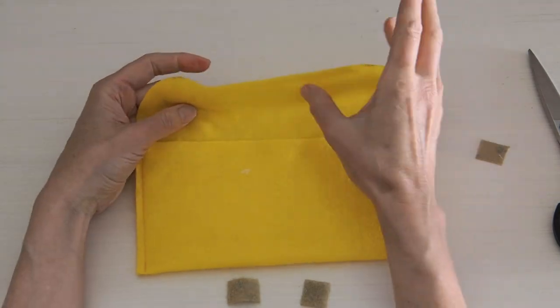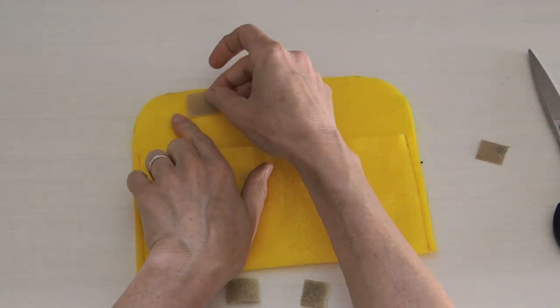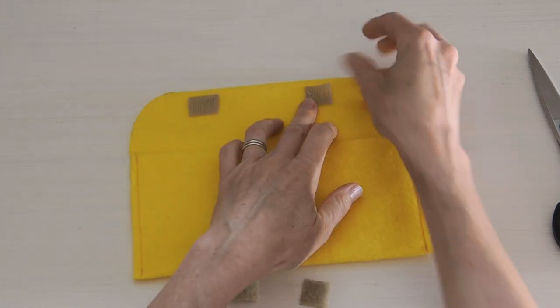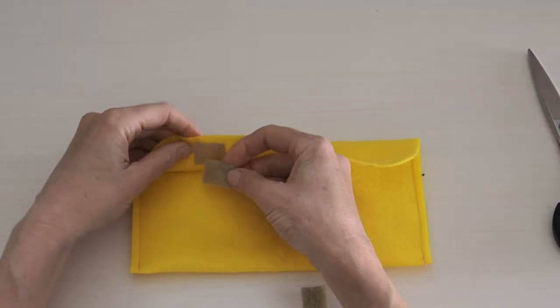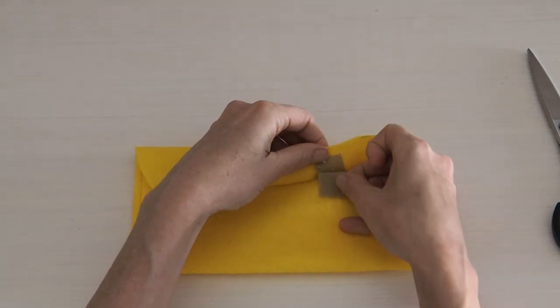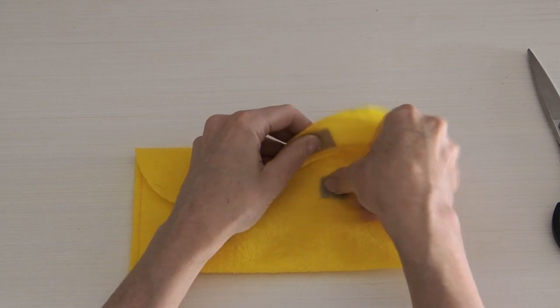I'm going to put it on that top flap first and it doesn't matter if you use the hook end or the more fluffy end of the velcro. I try and keep the same side of the velcro on the flap and then the same side on the bottom so I line that up and stick it on there and then the pouch can stay closed.